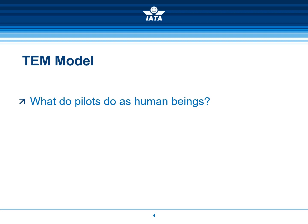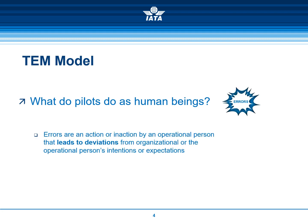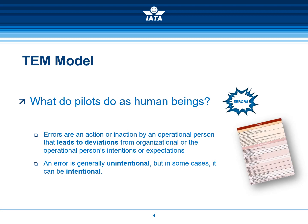What do pilots do as human beings? Errors. Errors are an action or inaction by an operational person that leads to deviations from organizational or the operational person's intentions or expectations. An error is generally unintentional, but in some cases it can be intentional. For the analysis, you will have to identify the errors that were contributing factors to the accident or incident. A complete list of errors is provided in the guidance for analysts.